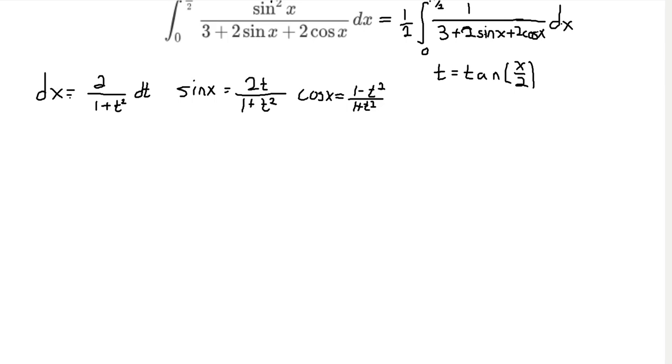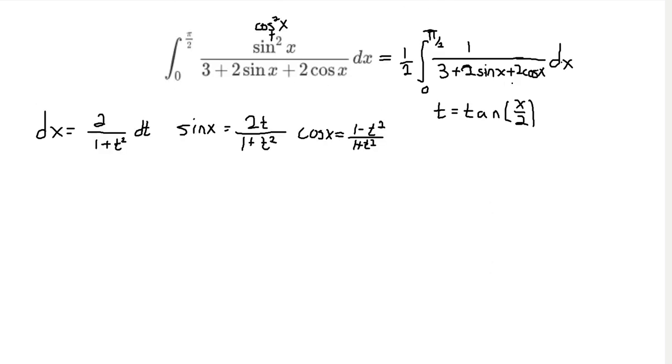And so dx is equal to 2/(1 + t²) dt, sine of x is equal to 2t/(1 + t²), and cosine of x is equal to (1 - t²)/(1 + t²). And proving this is all a matter of trig manipulations. But we're letting t equal to tangent of x/2.